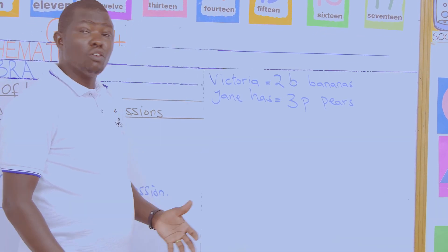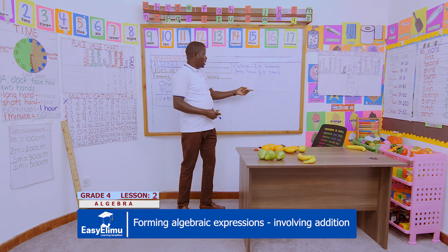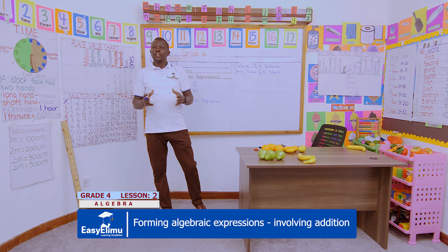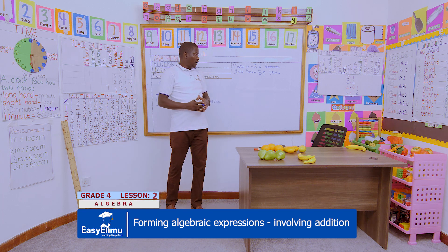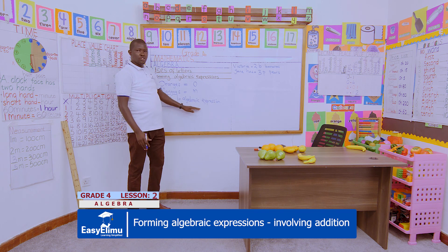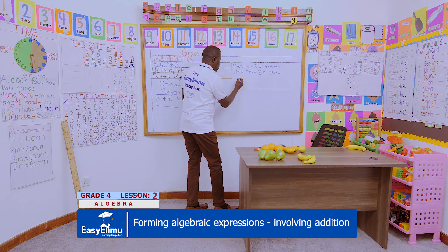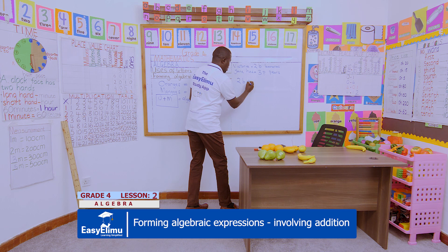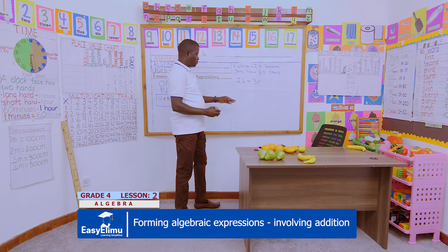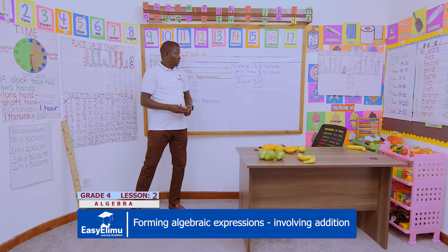Jan has 3p pears. We are using letters to represent the number of items they have. Now how many fruits do Jan and Victoria have altogether? By bringing them together we form an algebraic expression: the total number of fruits will be 2b + 3p. That is the algebraic expression we have formed.